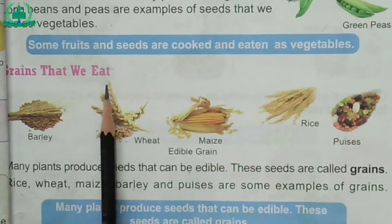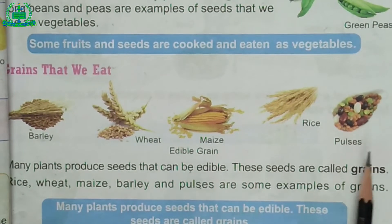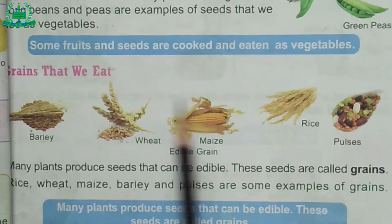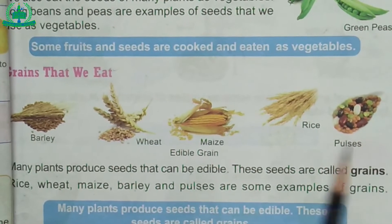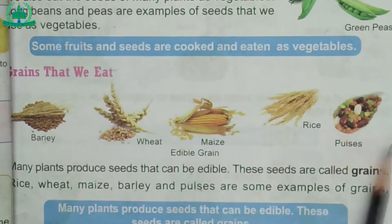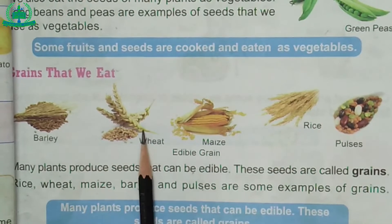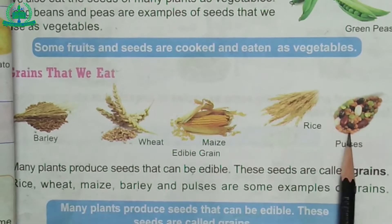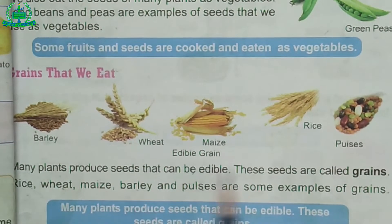Grains that we eat: Many plants produce seeds that can be edible. These seeds are called grains. Rice, wheat, maize, barley and pulses are some examples of grains.